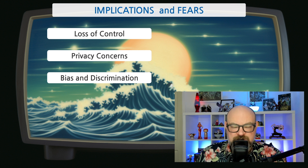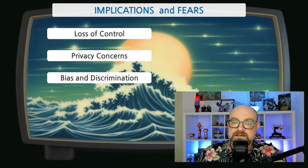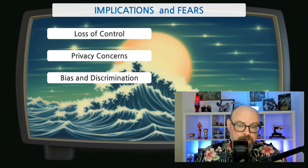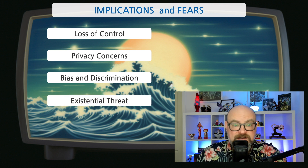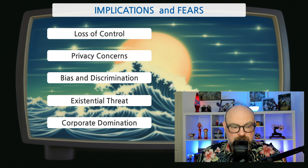Bias and Discrimination: AI models can inherit and amplify the biases present in their training data. This can lead to discriminatory practices, especially in sensitive areas like hiring, law enforcement, health insurance, or loan approvals. The Existential Threat: science fiction writers have often expressed concerns that super-intelligent AI, if not properly controlled, could threaten humanity and what it means to be human.